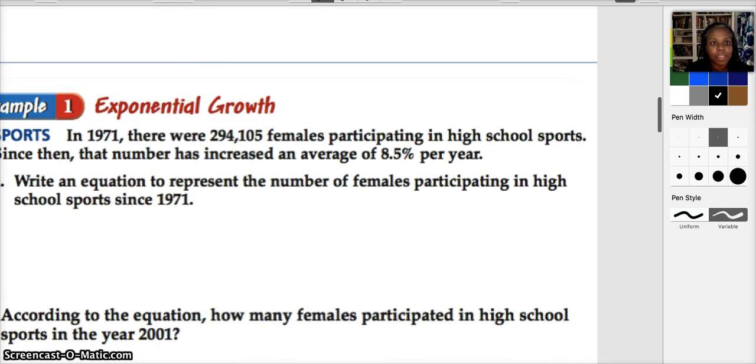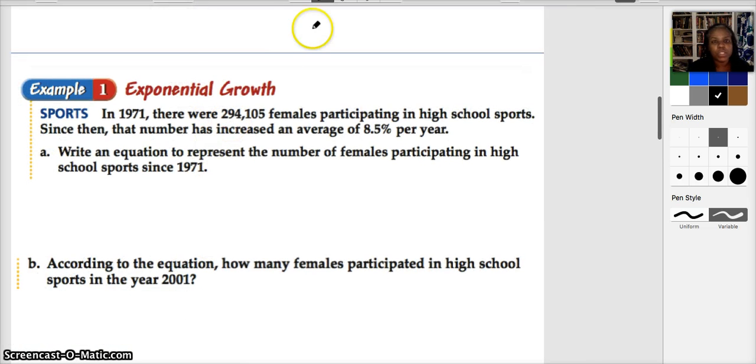Let's go ahead and attack some problems. So we have a situation where in 1971, there were 294,105 females participating in high school sports. Since that time, the number has increased an average of 8.5% per year. Write an equation to represent the number of females participating in high school sports since 1971. We're going to start off with the idea of y equals a times b to the x. A being our initial amount, so the amount of young ladies or women participating in this sport started off at 294,105. So we start that off with that initial value, A.